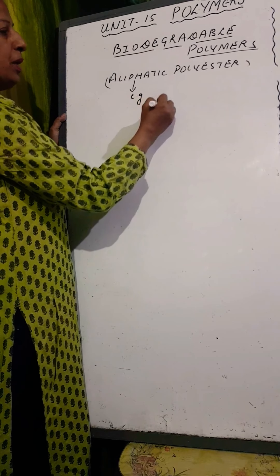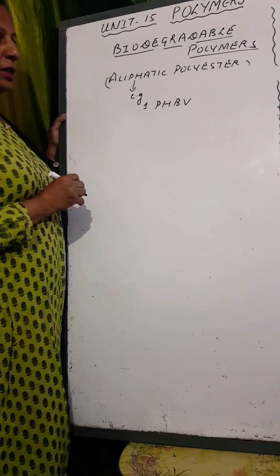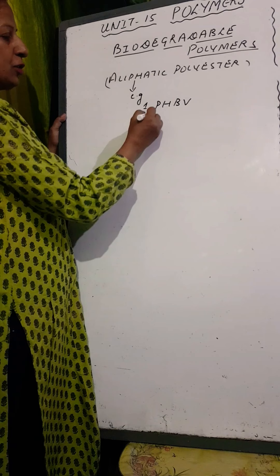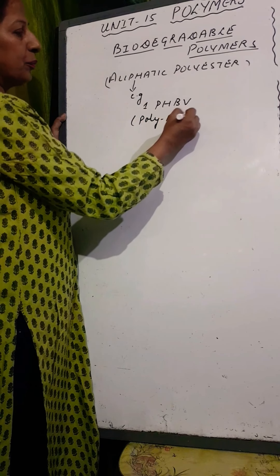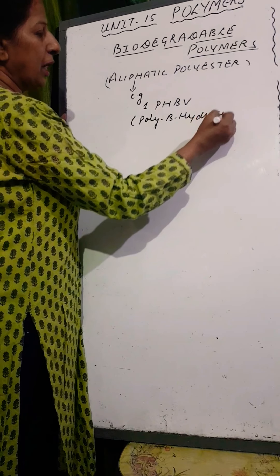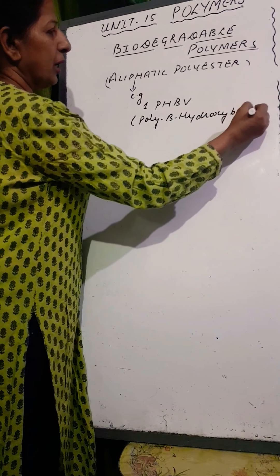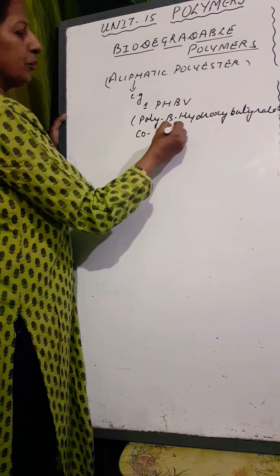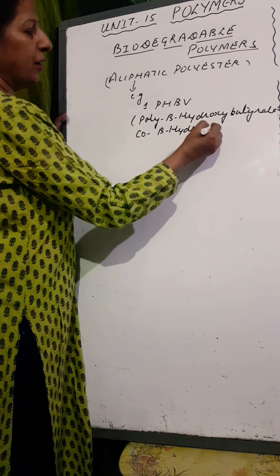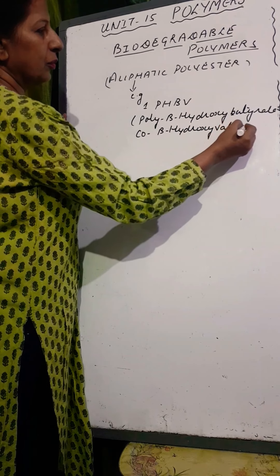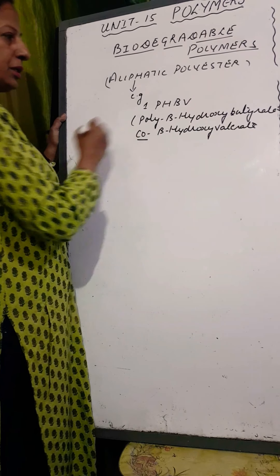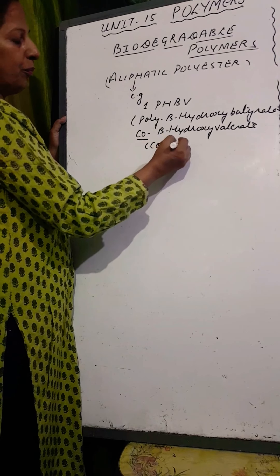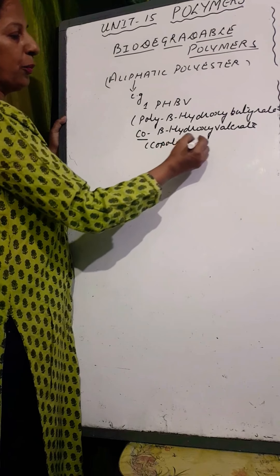Number one is PHBV - generally asked as a one-mark question, so you have to write the full form. PHBV stands for poly beta hydroxy butyrate co beta hydroxy valerate. It is a polyester, and 'co' indicates it is a copolymer, meaning it is made from two different monomeric species.